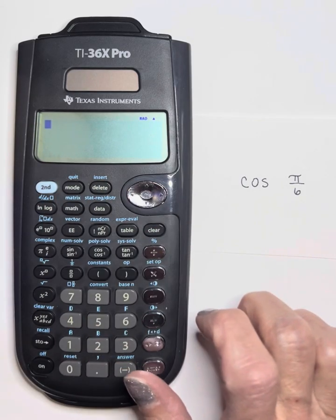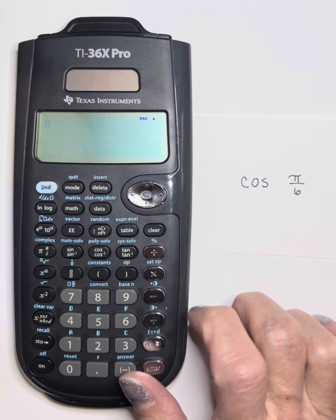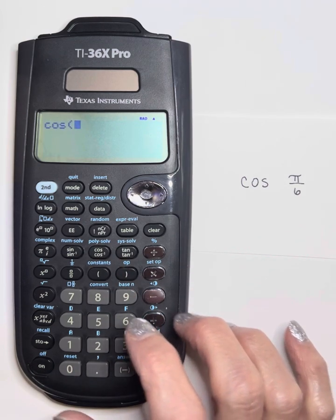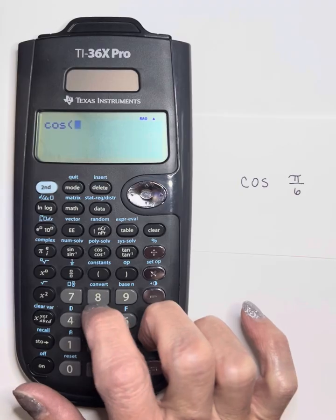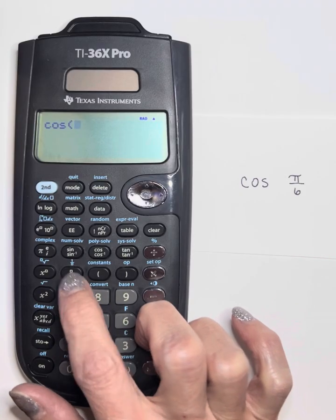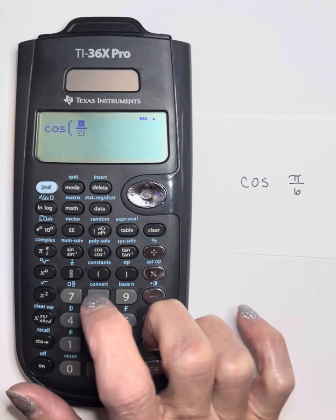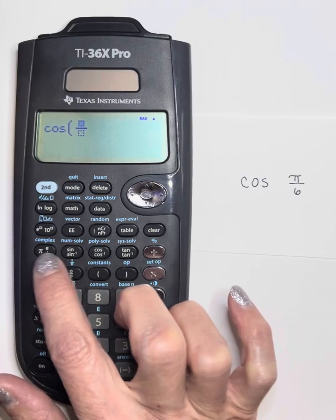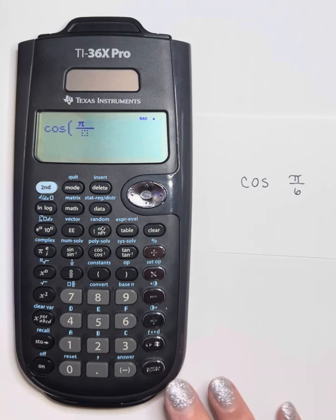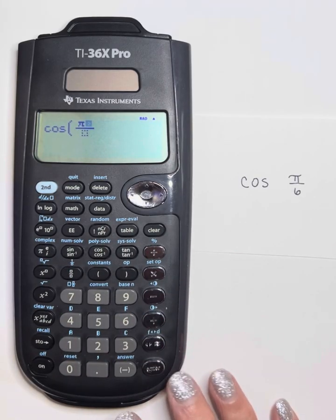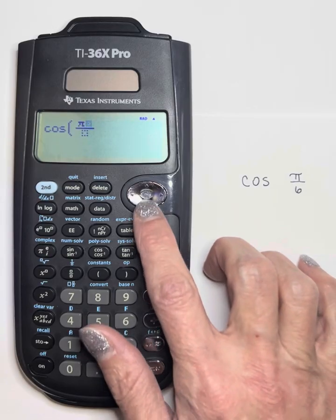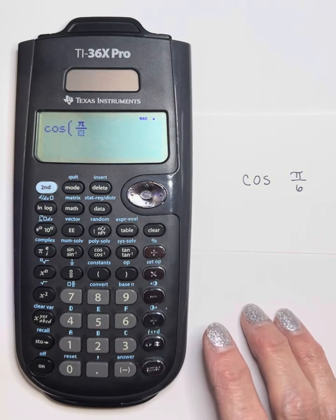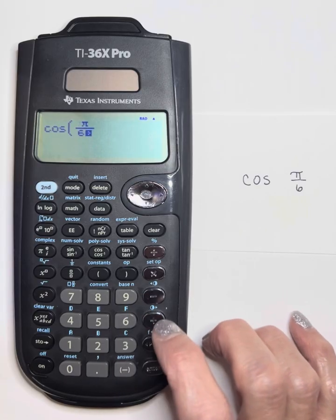I'm going to press the cosine button, and then use the fraction button that is right above the 7 key. I can put in the pi symbol, which is right next to sine — press it one time and that gives me pi. Then scroll down using the cursor and put in 6.